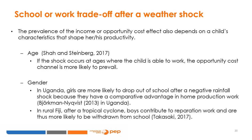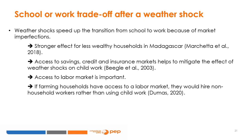On the other hand, if after an extreme weather shock households mostly require reparation work, boys' schooling will suffer the most, as found by Takasaki, 2017, in rural Fiji after a tropical cyclone. Most of the time, weather shocks speed up the transition from school to work because of market imperfections. Marchetta and co-authors, 2018, find that negative rainfall deviations and cyclones encourage young Malagasy people to enter the workforce and drop out of school. The effect is stronger for less wealthy households who cannot access credit and saving markets to cope with the shock.